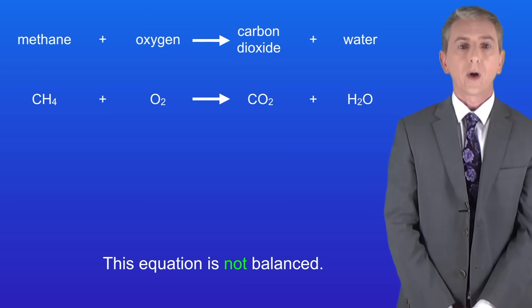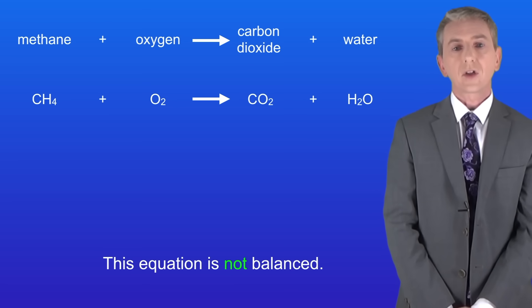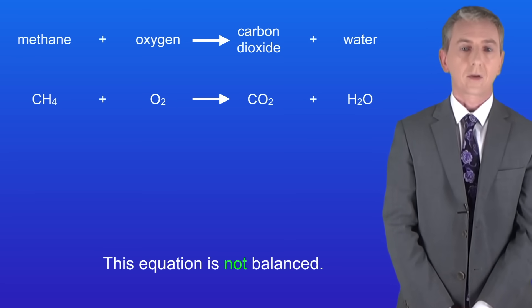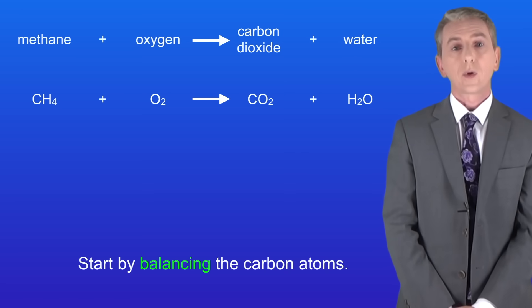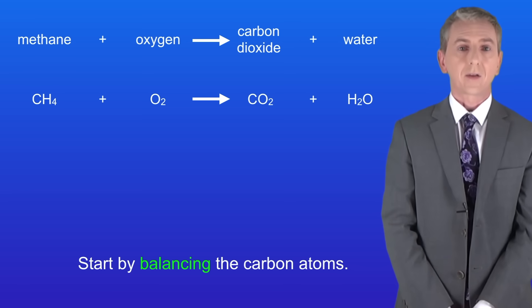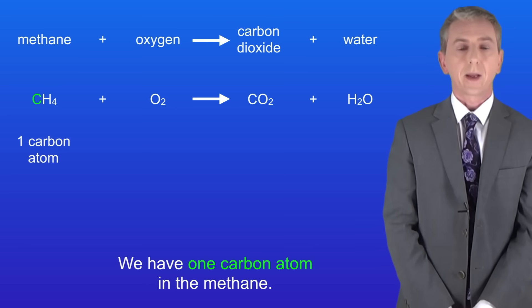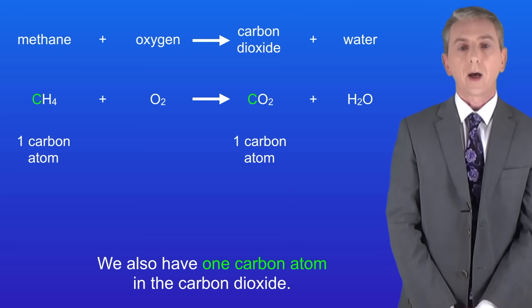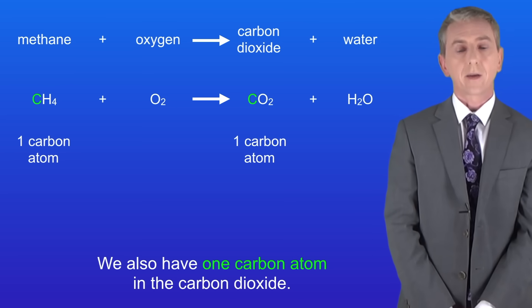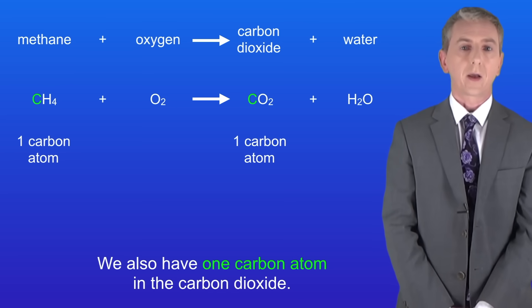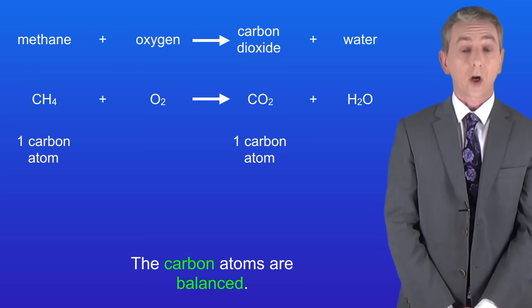I'm showing you here the equation for the complete combustion of methane. As you can see this equation is not balanced. We start by balancing the carbon atoms. We've got one carbon atom in the methane and we also have one carbon atom in the carbon dioxide. This means that the carbon atoms are balanced.